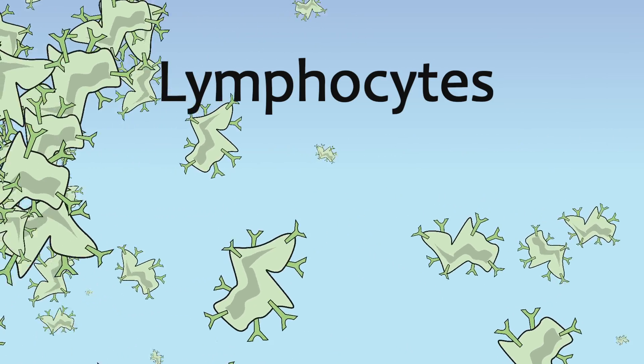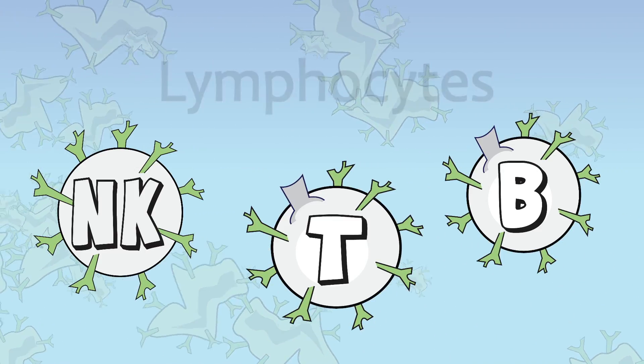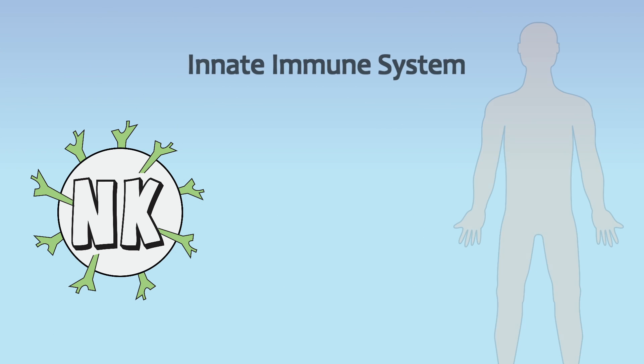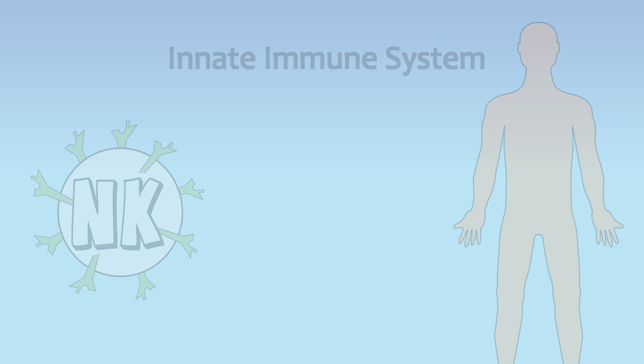There are three types of lymphocytes: B cells, T cells, and natural killer cells. Natural killer cells play a primary role in our innate immune system and they are not antigen-specific, meaning they do not rely on surface antibody receptors to activate their function. We'll learn more about natural killer cells in another video.